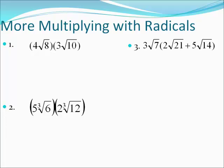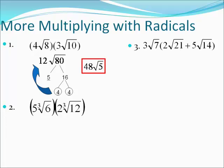Try number one on the more multiplication. Four times three is twelve, eight times ten is eighty, so we start off with twelve square root of eighty. Break eighty down in a factor tree: eighty is five times sixteen, and sixteen is four times four. We have a group of fours — take those fours out. When they come out, they multiply by the twelve that's already out there to make forty-eight, and the five is left over inside. So forty-eight square root five is the answer to number one.